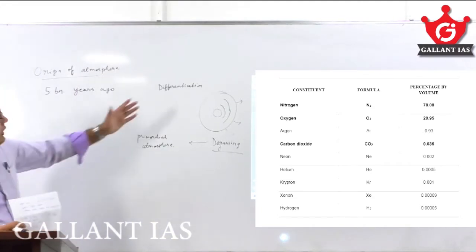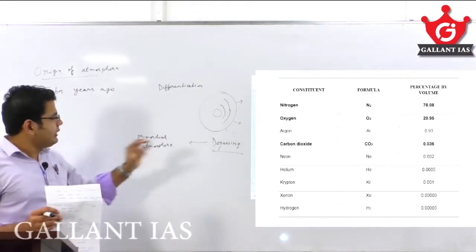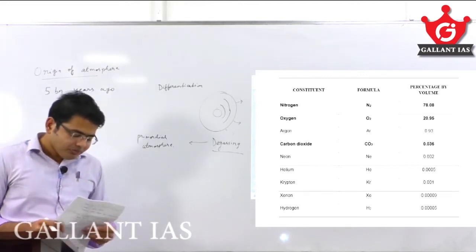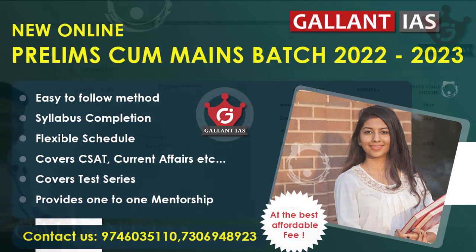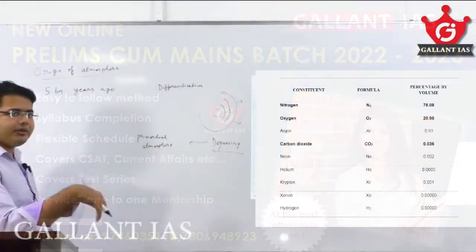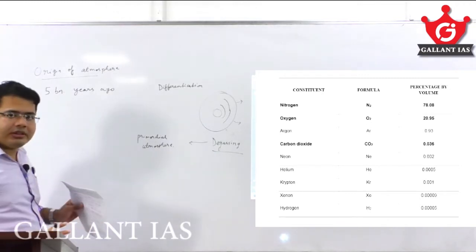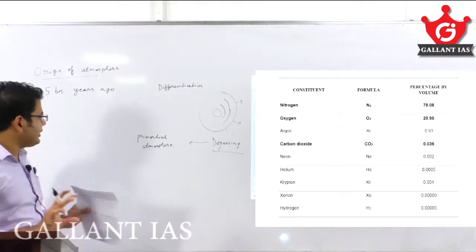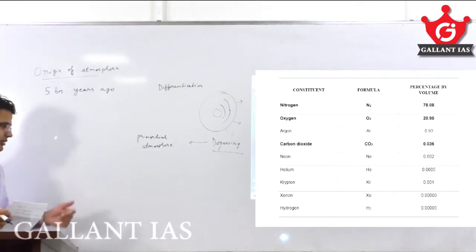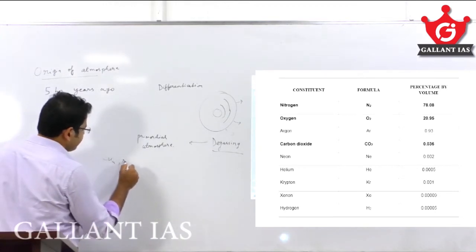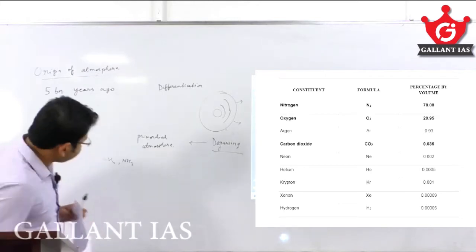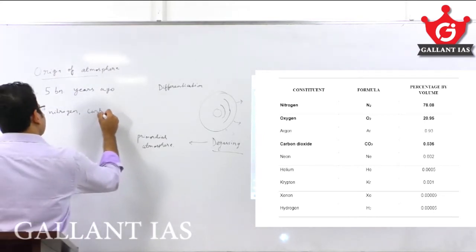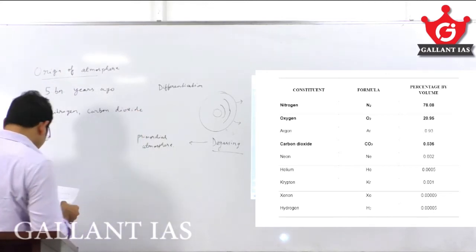So, degassing happened and differentiation was taking place across the different layers of the earth. As a result of degassing, the primordial atmosphere was formed. This degassing was due to processes like radioactive decay acting inside the surface of the earth. We need not get into too many technical details for GS. The primordial atmosphere consisted of elements like methane, nitrogen, carbon dioxide, and water vapor.